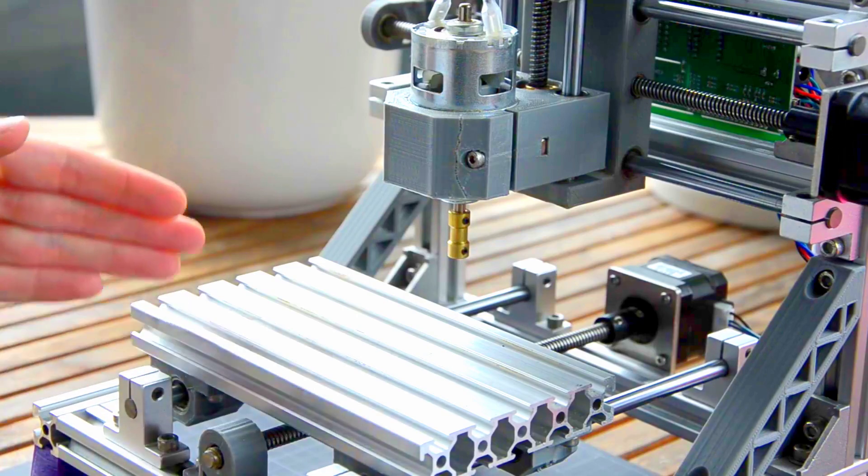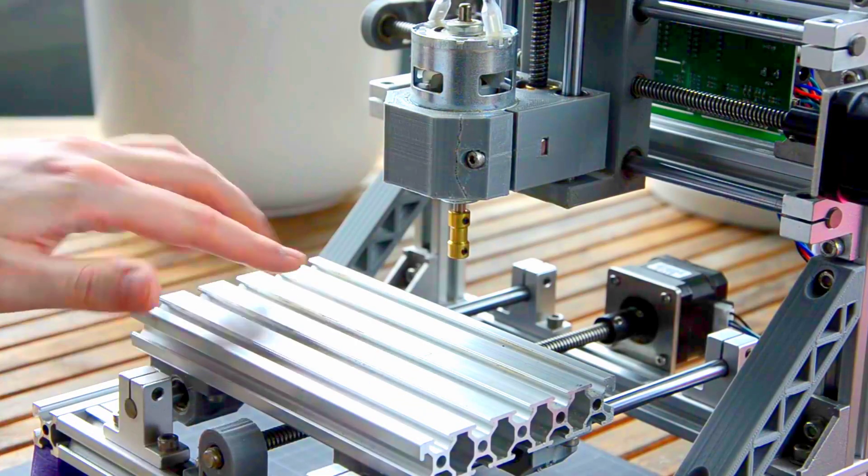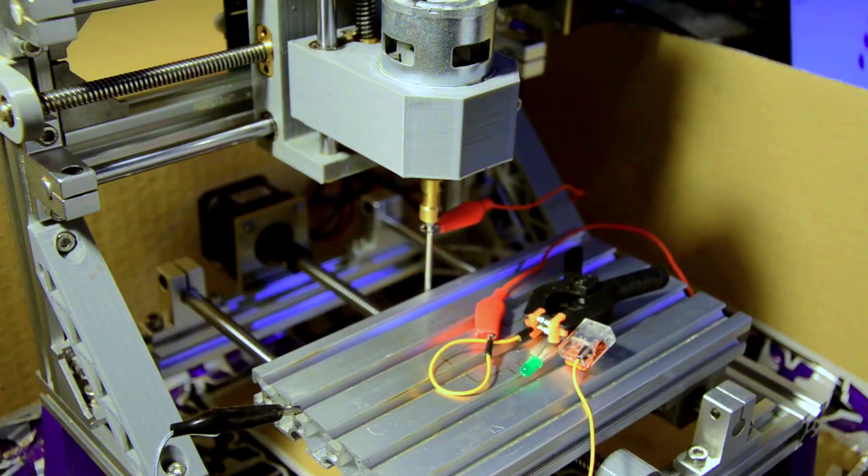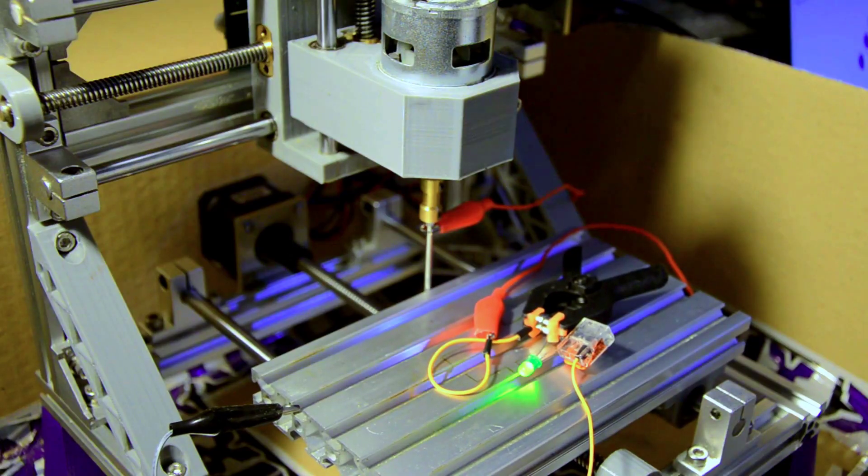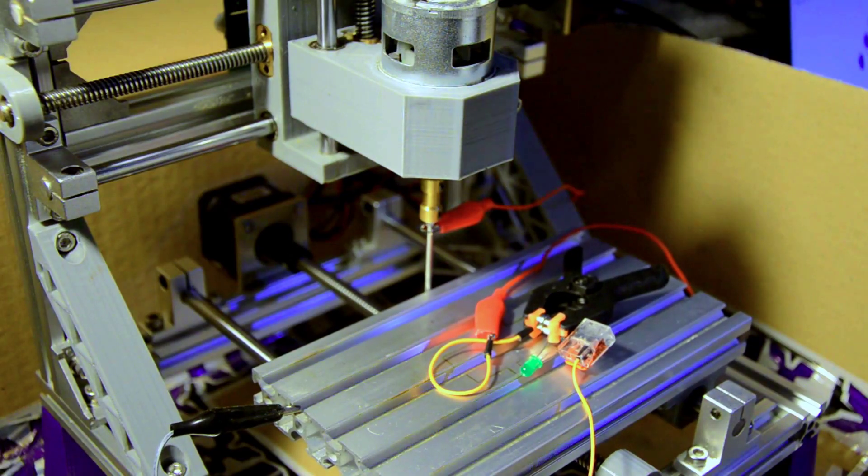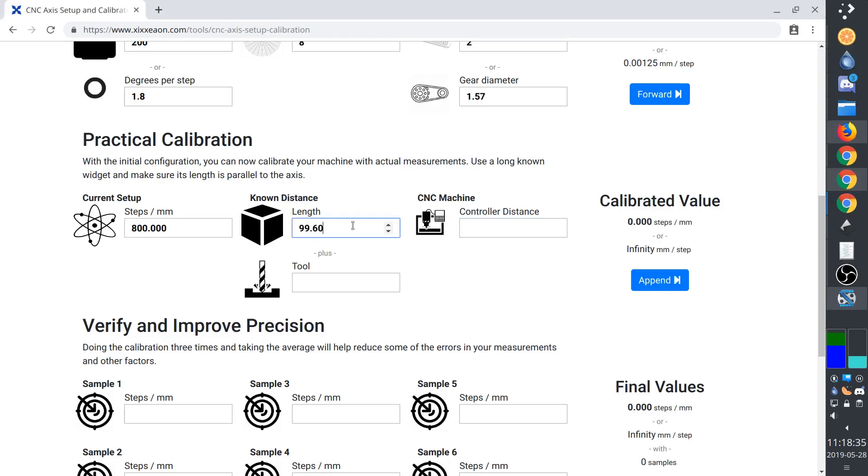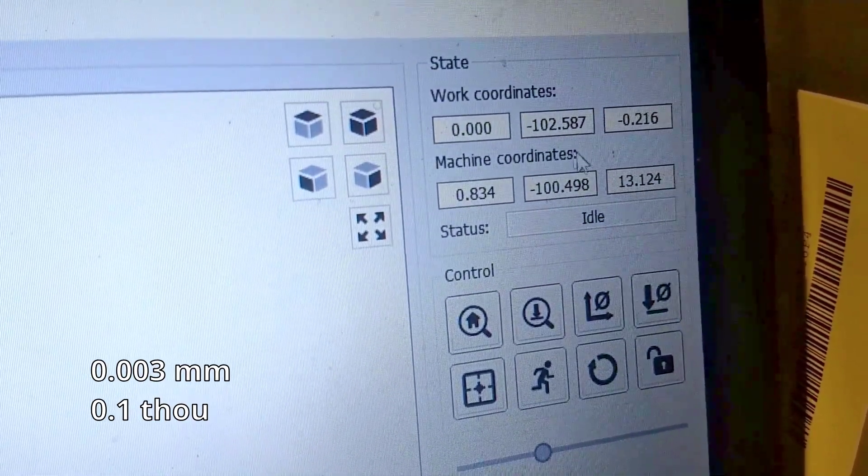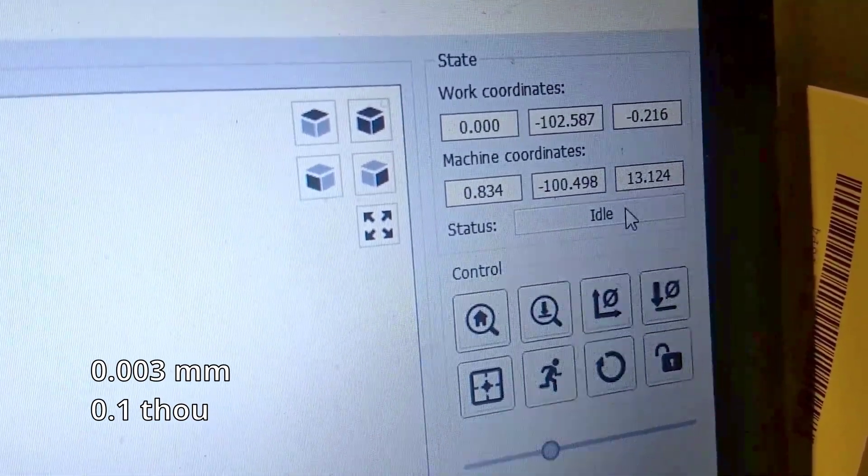Even with one of the cheapest CNC mills, like this 1610 Chinese engraving machine, we can still achieve tremendous accuracy without any expensive tools. Today, I'll show you how to calibrate the positioning of the axis to about 0.00000 of a millimeter, or 0.00000 of an inch. Let's go!